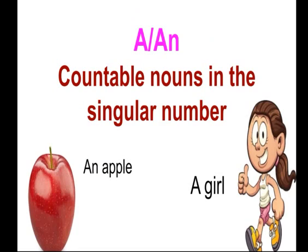A or an is used before countable nouns — jin ko hum gin sakte hai. Countable nouns means nouns which we can count. A and an is used before countable nouns in the singular number — matlab one, not many. So we can use a or an like: an apple, a girl. Apple and girl countable noun hai, aur saath mein singular bhi hai.